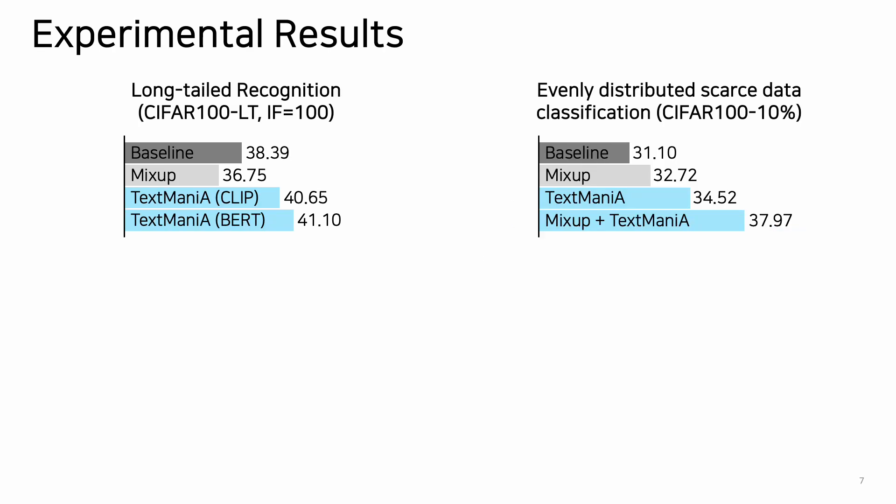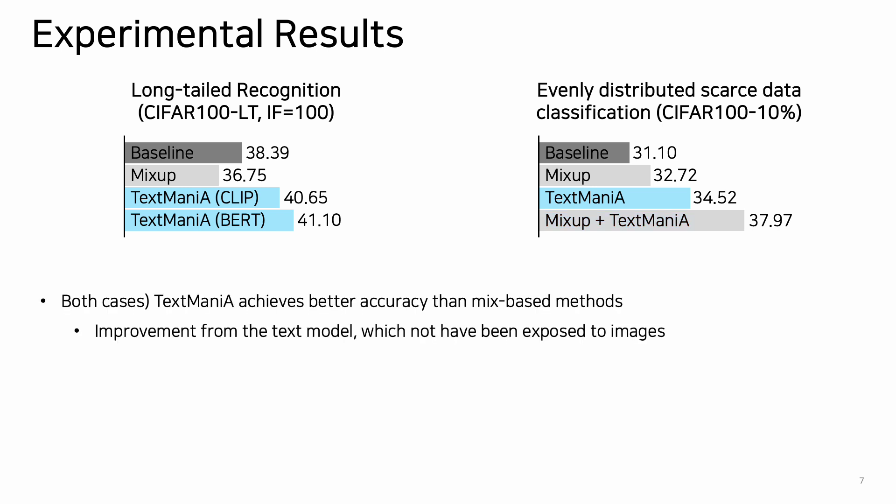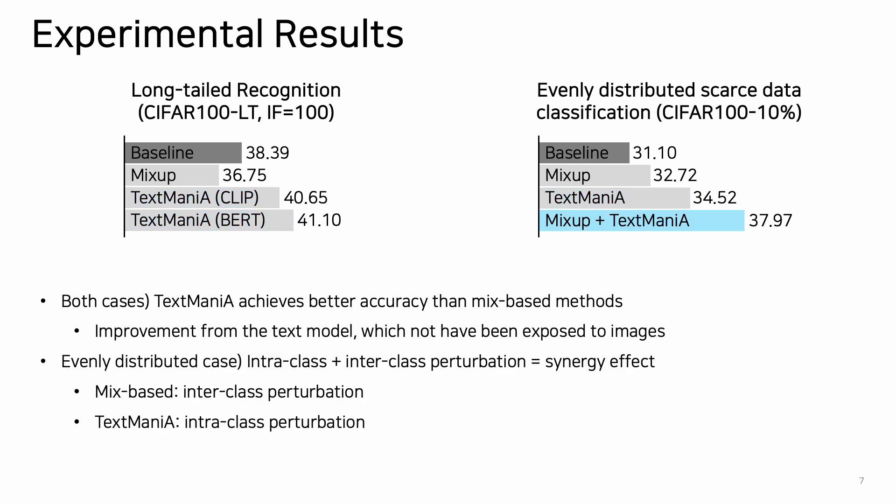Experimental results in long-tailed recognition and scarce data classification demonstrate the effectiveness of Text Mania. In both cases, Text Mania achieves better accuracy than mix-based methods. Surprisingly, the text model brings improvement to visual classification tasks, although it has not been exposed to images. When we use the mix-based method and Text Mania together in an evenly distributed case, it brings a synergy effect, because they handle different levels of perturbation — the mix-based method is an inter-class perturbation and Text Mania is an intra-class perturbation.